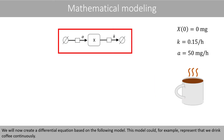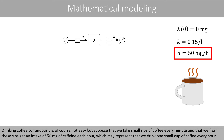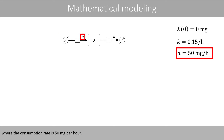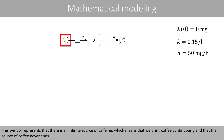We will now create a differential equation based on a new model. This model could, for example, represent that we drink coffee continuously. Suppose that we take small sips of coffee every minute, and that we get an intake of 50 mg of caffeine each hour, which may represent drinking one small cup of caffeine per hour. A continuous amount of caffeine that enters the body is depicted with a source symbol, where the consumption rate is 50 mg per hour, representing an infinite source of caffeine that never ends.